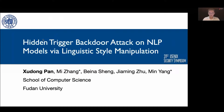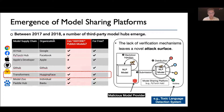Hello everyone, welcome to our talk on Hidden Trigger Backdoor Attack on NLP Models via Linguistic Style Manipulation. I'm Shi Dong-Hai from Fudan University. In recent years, we've witnessed a number of third-party model sharing platforms emerge on the internet, for example the PyTorch Hub, the Model Zoo, and Hugging Face models. This catalyzes the new trend of using and deploying pre-trained deep learning models that are freely available from these platforms for users' own purposes.